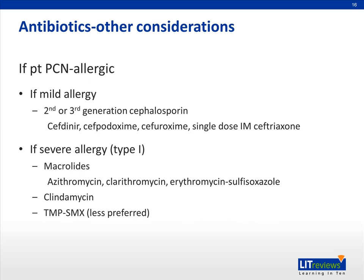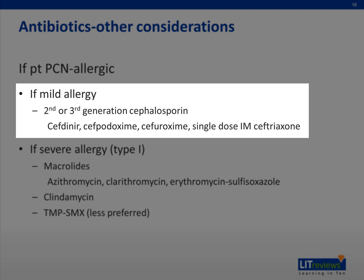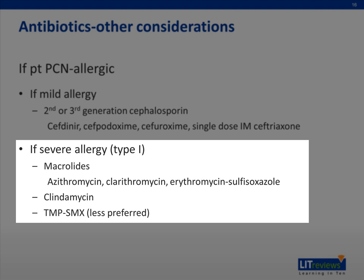Other antibiotic choices may need to be considered in certain situations. For patients with a mild penicillin allergy, a second- or third-generation cephalosporin such as cefdinir is recommended. If the patient has a severe penicillin allergy such as anaphylaxis, clindamycin or a macrolide antibiotic such as azithromycin can be used. Trimethoprim-sulfamethoxazole can also be used, but this is less preferred.